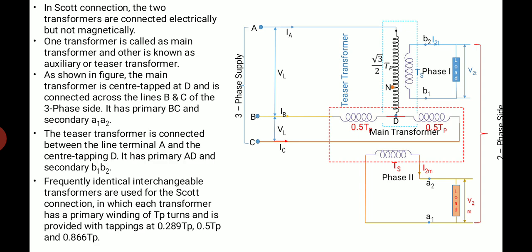You can see the circuit arrangement of the Scott connected transformer. As you can see that the Scott connection requires the two transformers out of which one transformer is known as a main transformer which is shown by red dotted square. And the other transformer is known as auxiliary transformer or a teaser transformer which is shown by the rectangle of dotted blue lines.